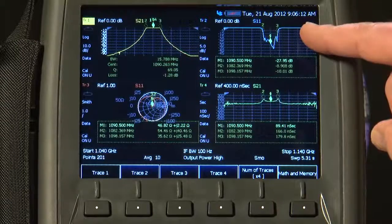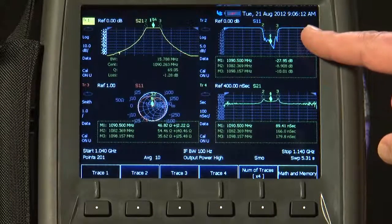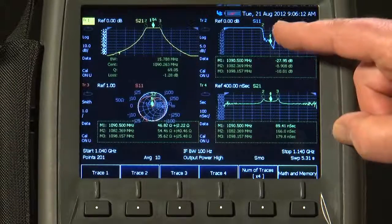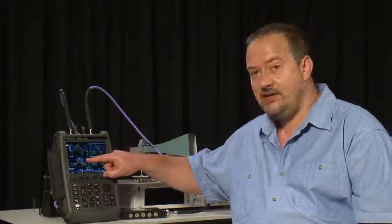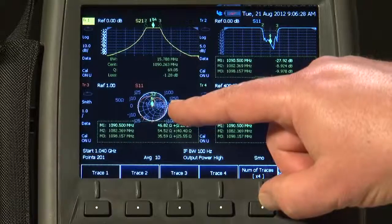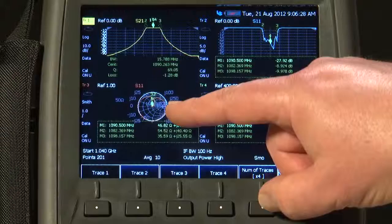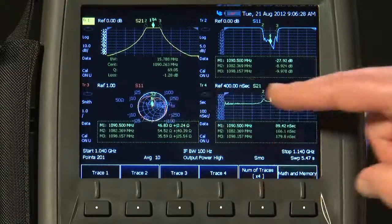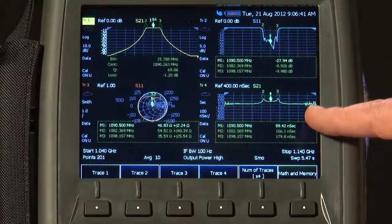In Trace 2, I am measuring S11, the return loss of the filter, and you can see the same three markers are still present on that display as well. On Trace 3, I am displaying a Smith Chart, so we can measure the impedance of the filter at the range of frequencies that we are sweeping. In Trace 4, I am currently measuring Group Delay.